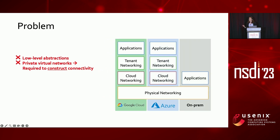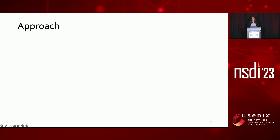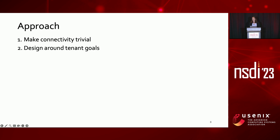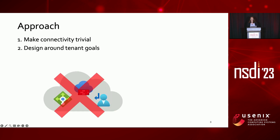Further, this problem gets worse as we consider a multi-cloud deployment, since each cloud has its own unique versions of these low-level building blocks, so an enterprise must actually manage several of these stacks in parallel. In light of this complexity, we sought to create a new cloud tenant networking API which simplifies the tenant experience. Specifically, we want to make connectivity trivial to achieve and design instead around a tenant's high-level goals for their networks, not low-level building blocks.